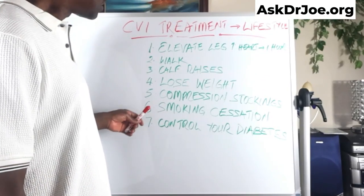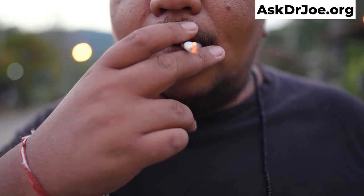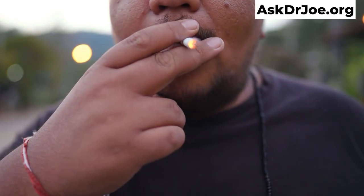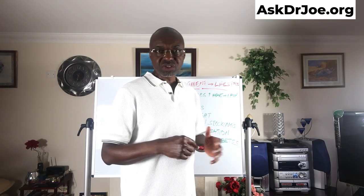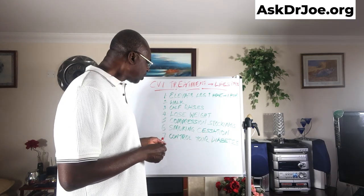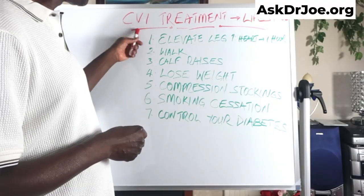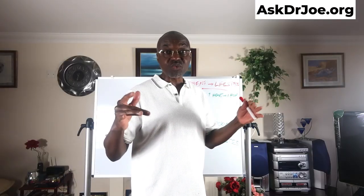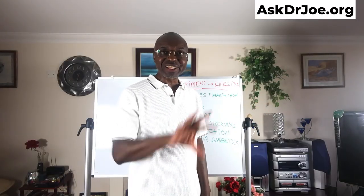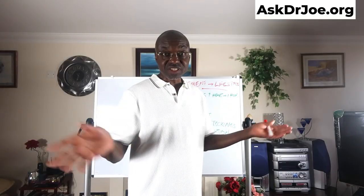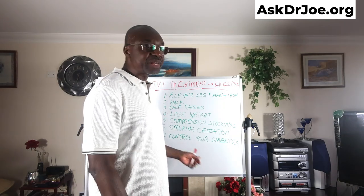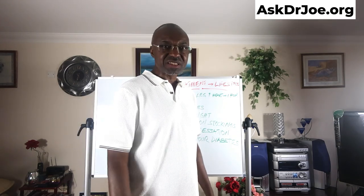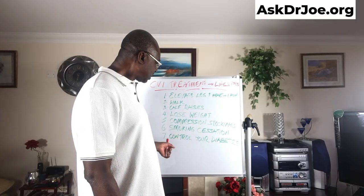Number six: smoking cessation. Stop smoking — I know it's not easy, but get in touch with a smoking cessation service and they will help you. Smoking damages blood vessels and you really want to stop the habit. Number seven: control your diabetes if you're diabetic. I did a video series in summer 2023 — eight videos showing how to reverse type 2 diabetes. They are free to watch. Control your diabetes because diabetes is not good for blood vessels at all.